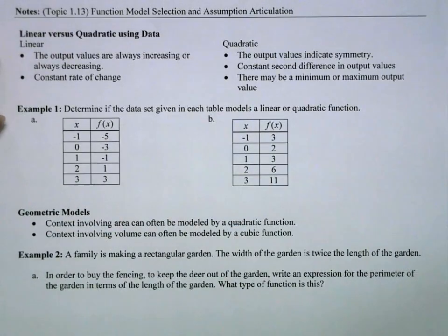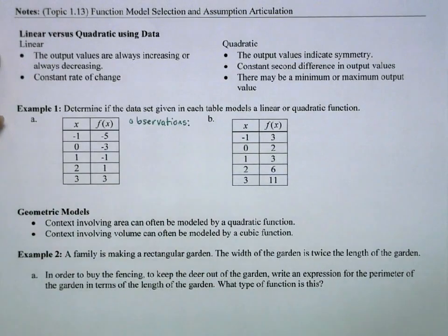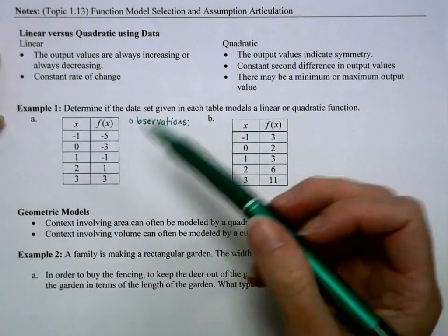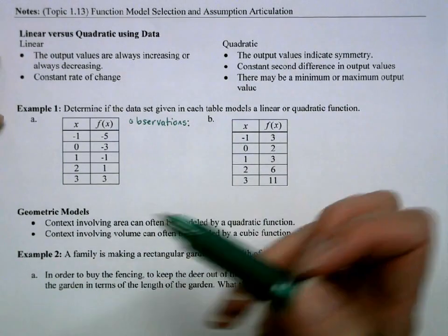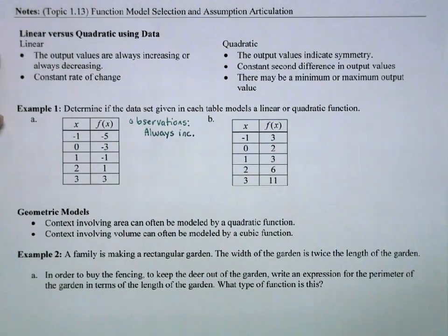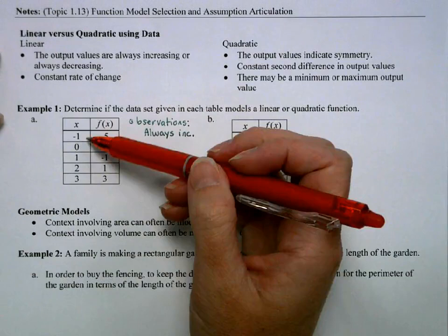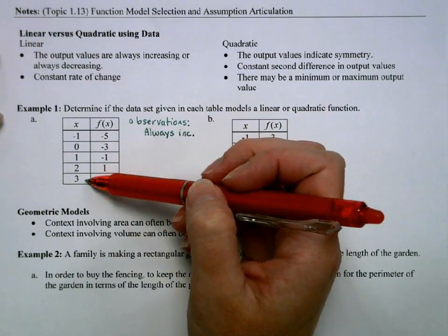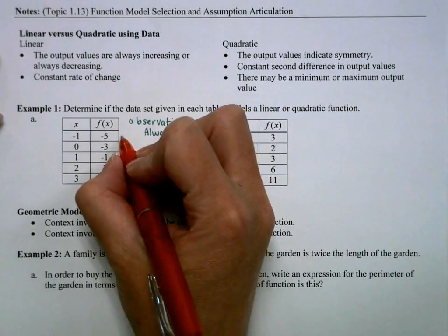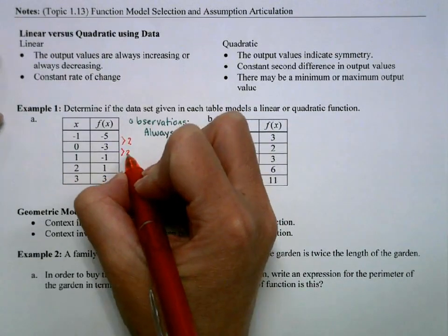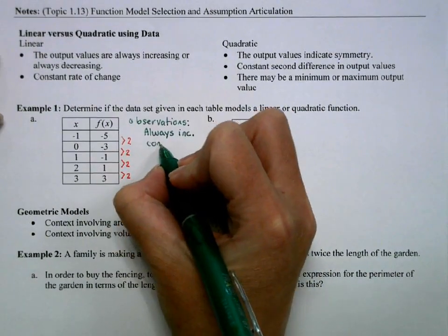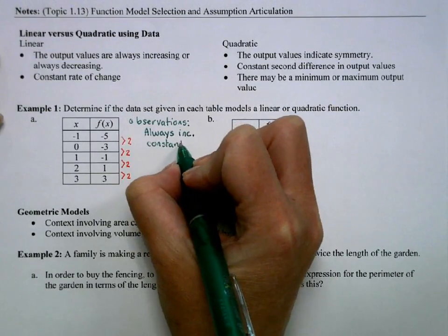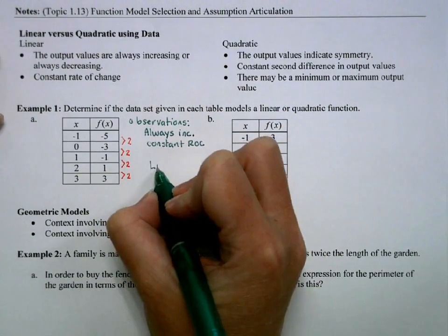Let's look at this first example. My first observation is that these output values — negative 5, negative 3, negative 1, 1, 3 — are always increasing. The second thing I'll look at is the differences. Since these are equal-length input values, I can just look at the differences: going up 2, up 2, up 2, up 2, up 2. That means we have a constant rate of change, which means our function is linear.